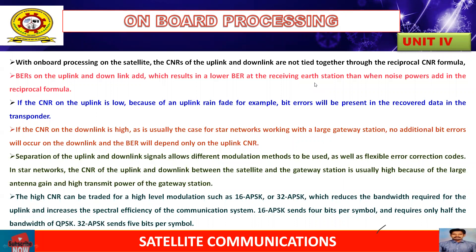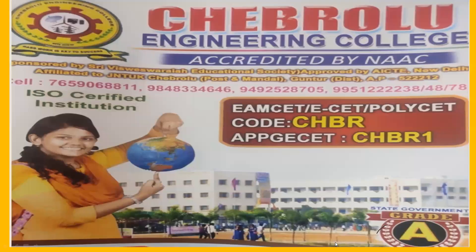If the CNR on the downlink is very high, then we have to create further higher-level modulation — which uses 16-bit and 32-bit schemes. That will be explained later. Thank you everyone for your active participation in this online session. Stay home. Stay safe.